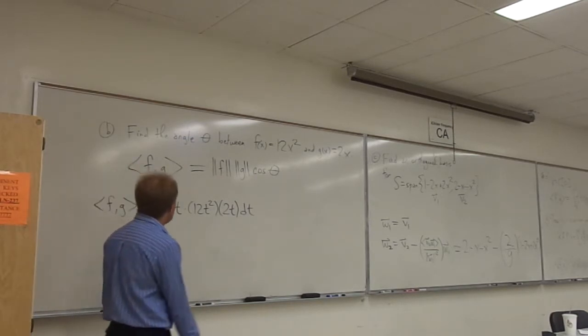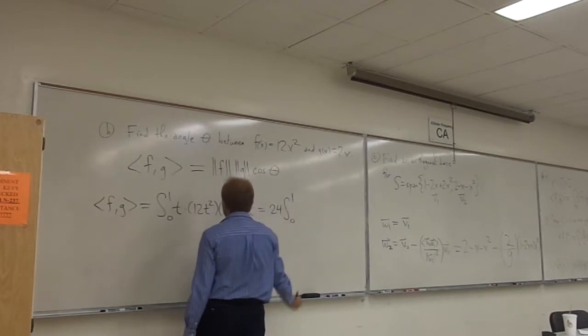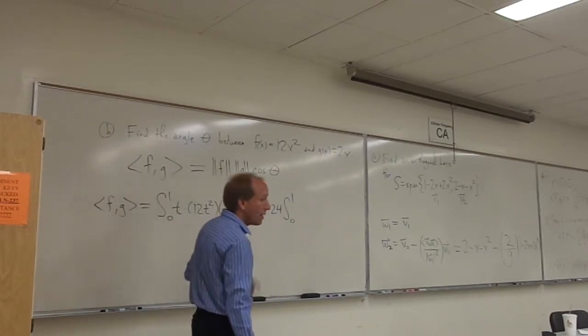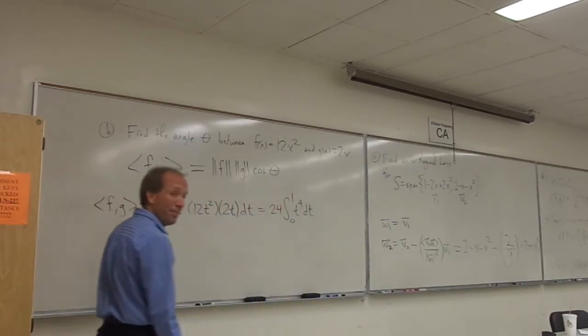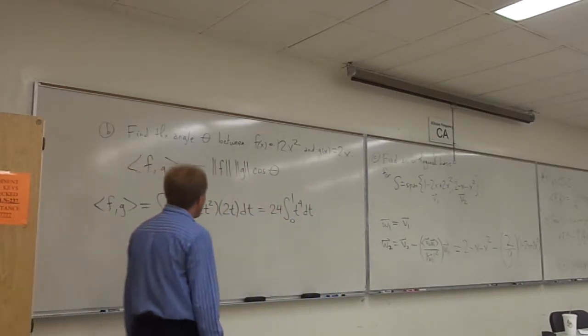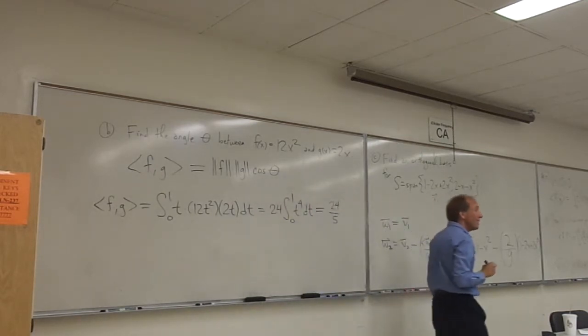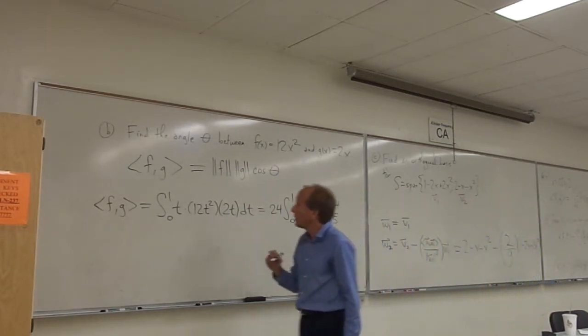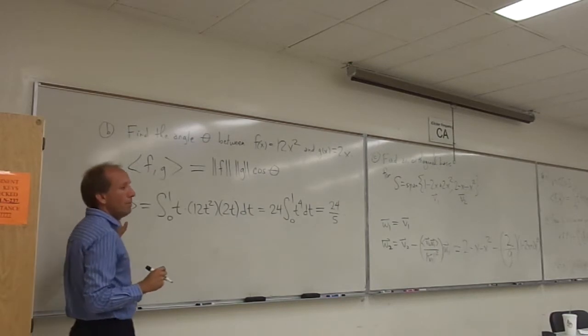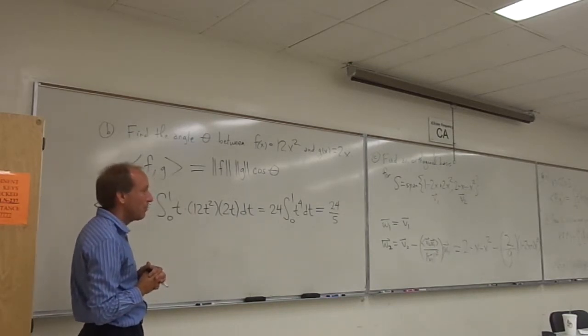So, that actually gives you...there's a 24 that comes out of everything, and then the number of t's that you have is 4. So, it's the integral of t to the 4th, from 0 to 1. So, what's my answer going to be here? 24 over 5, I believe. 24 over 5. Okay. So, that's the inner product of f of g. So far so good?